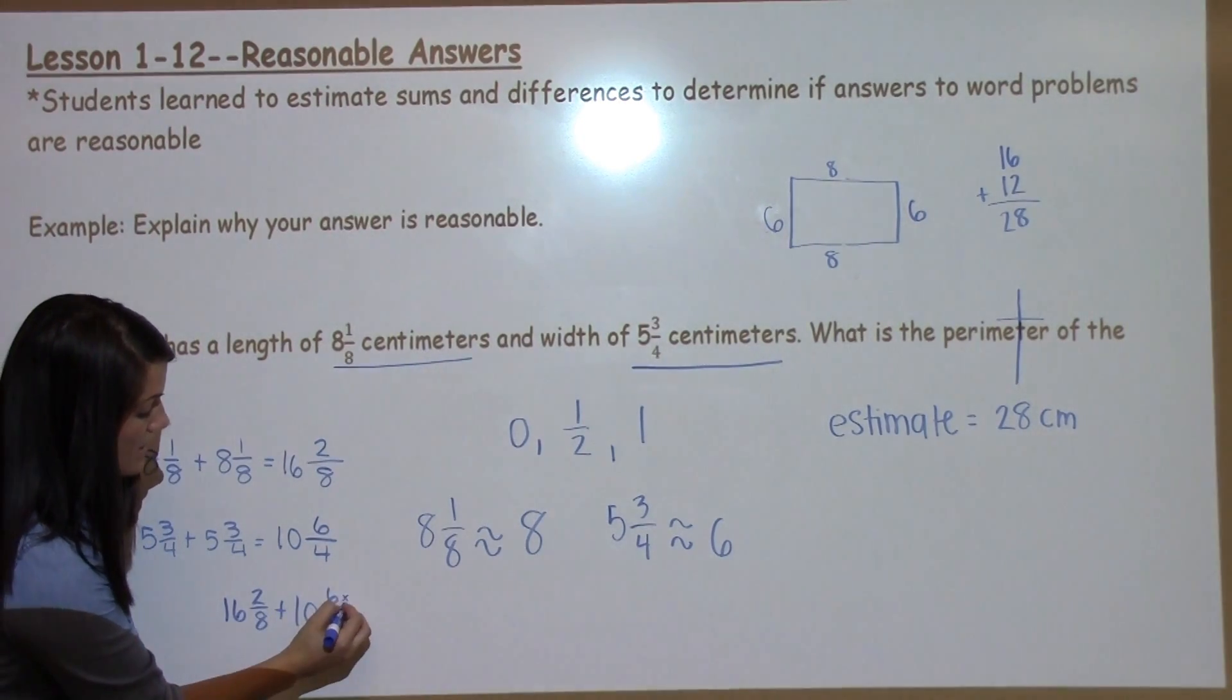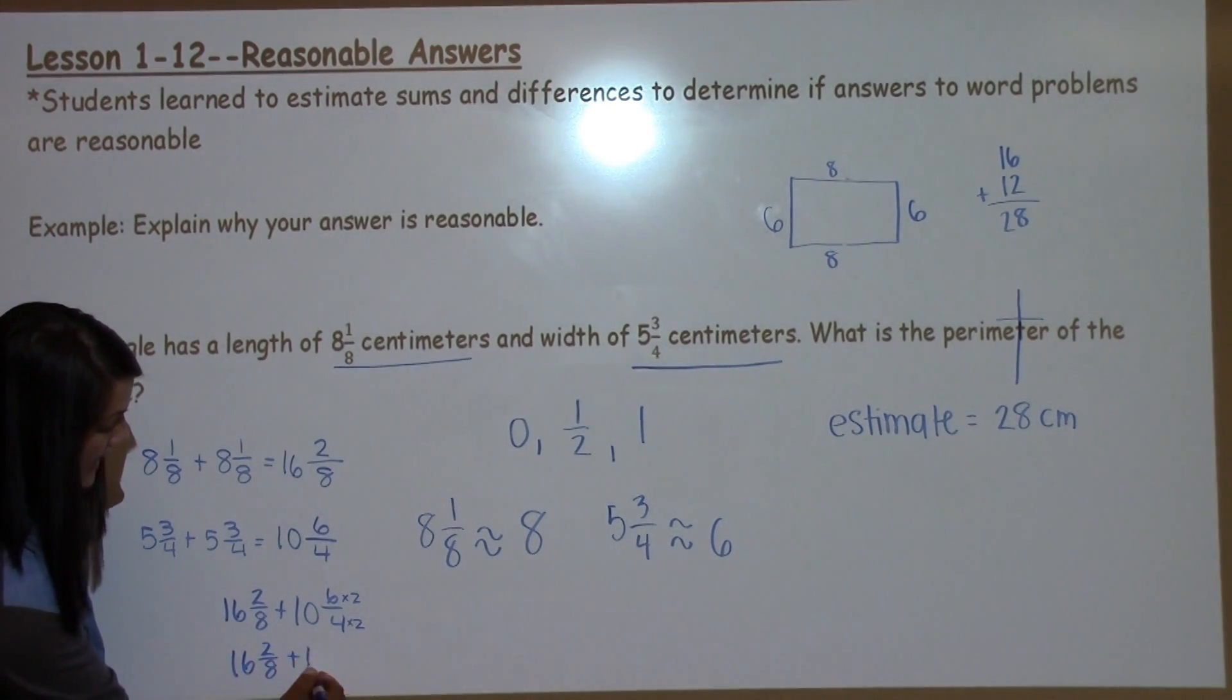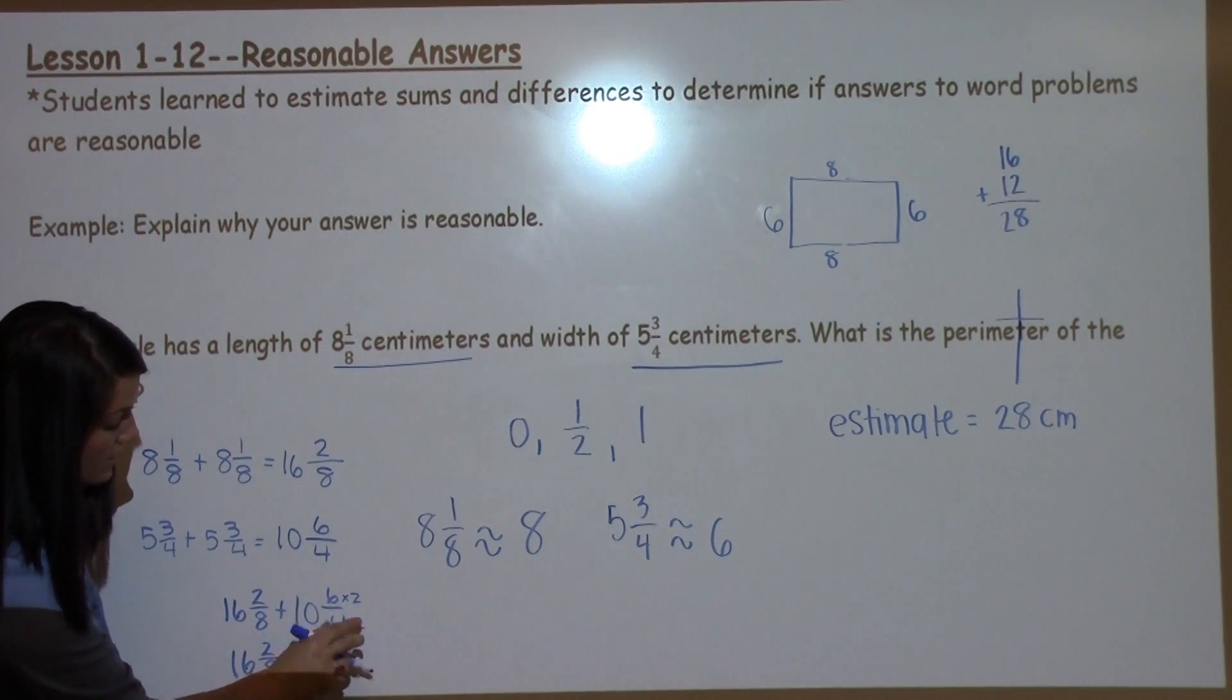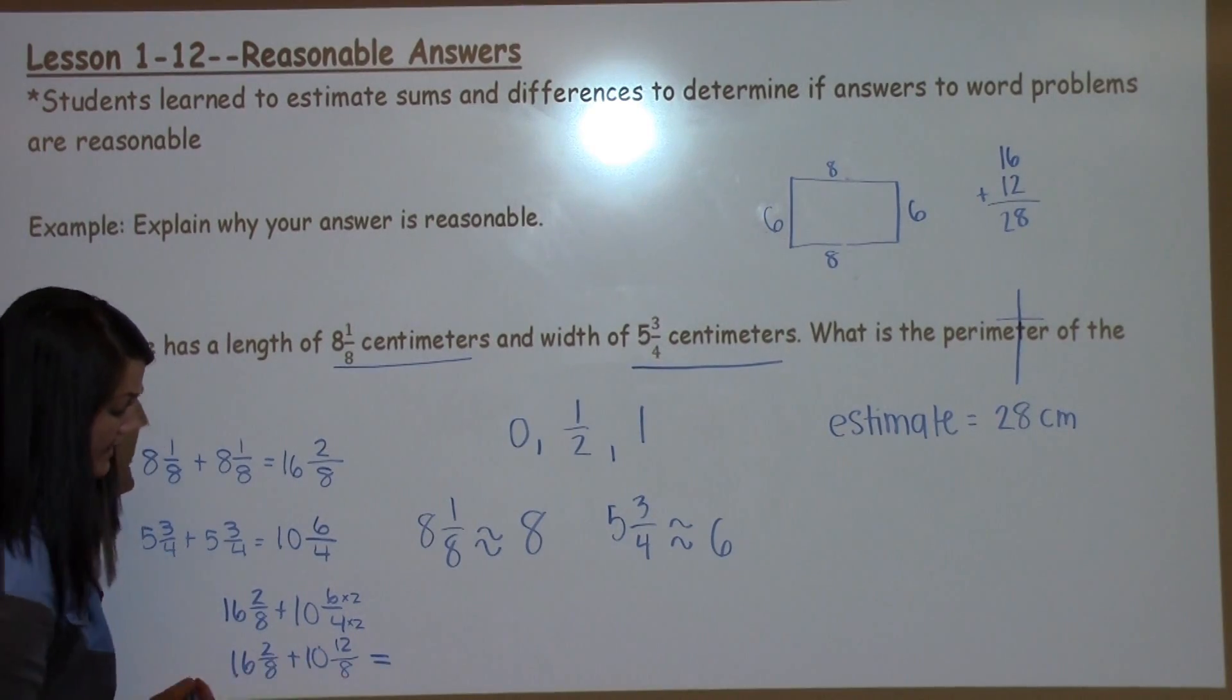Anything I do to the bottom, I must do to the top. And now I have 16 and 2/8 plus 10 and 6 times 2 is 12, 4 times 2 is 8. And now I get to add these numbers.